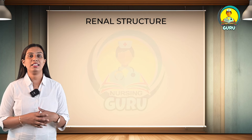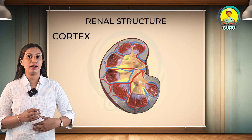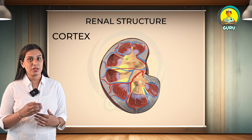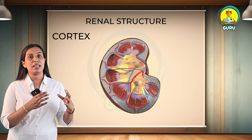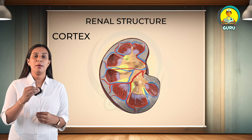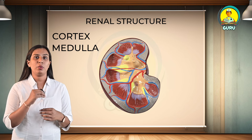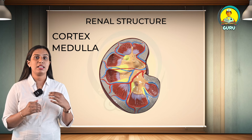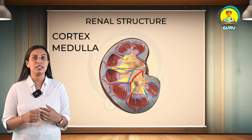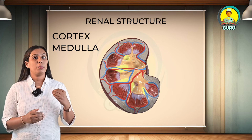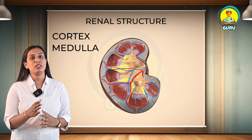Now let's check the renal structure. The cortex is the outer region, dark brown in color. The cortex penetrates into the medulla between 2 pyramids. Medullary rays are striations that extend to the cortex from the base of the renal pyramids. The medulla is the inner region, a light brown area deep to the cortex, and is made up of around a dozen renal pyramids, each of which has a renal papilla protruding medially at the peak, with its base facing the cortex.